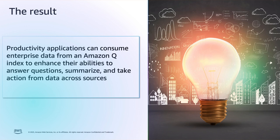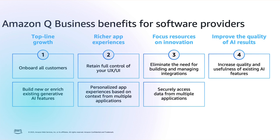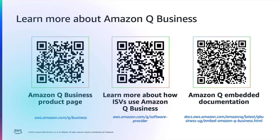The result: productivity. Applications can now consume enterprise data from an Amazon Q-Index to enhance their ability to answer questions, summarize, and take actions from data across sources. As we close our presentation, let's recap what we learned. Amazon Q-Business offers key benefits for software providers by driving top-line growth, enhancing app experience, enabling innovation, and improving AI results. It helps onboard customers, enrich generative AI features, and ensures full control over the user experience with personalized app experiences. By eliminating integration complexities and providing secure data access, it allows businesses to focus on innovation. Additionally, it enhances the quality and usefulness of AI features, making applications more effective and intelligent. Learn more about Amazon Q-Business and its features using the QR codes or links provided.